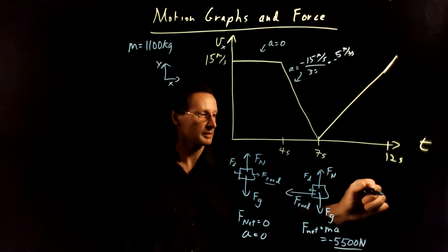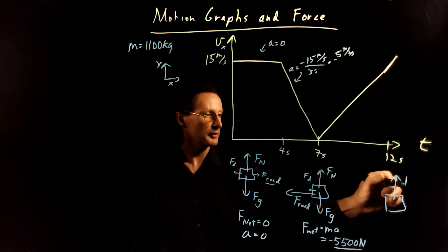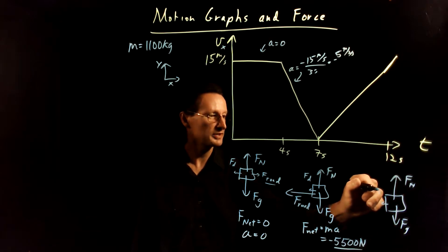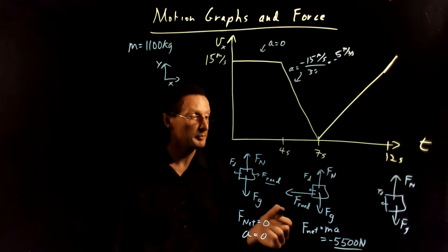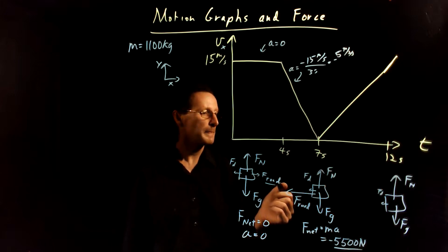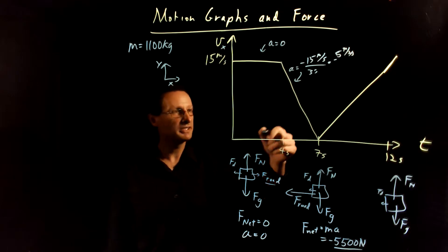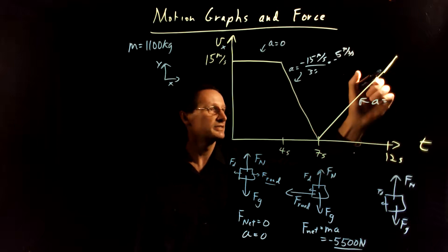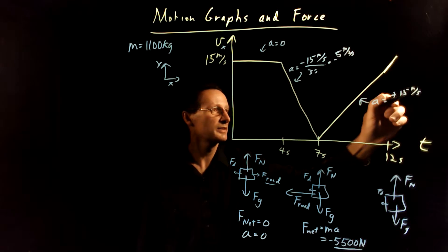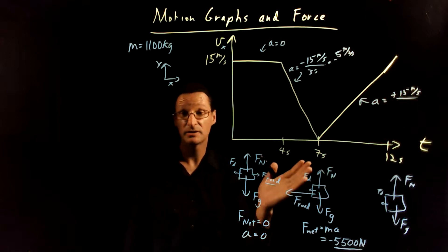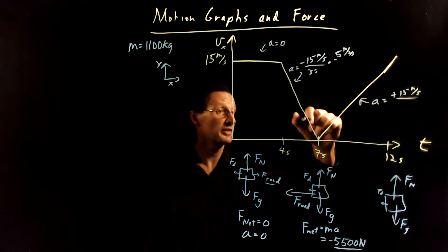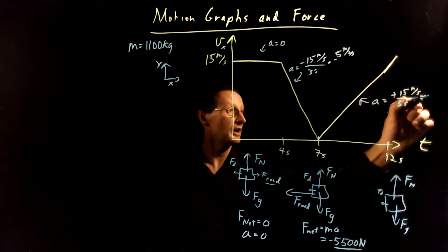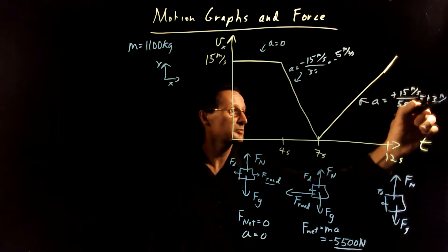Let's think about this last segment. Again, we have the normal force up and force of gravity down, and some small drag force that will vary because the speed is changing. Just like before, we need the slope of this segment. The rise is positive 15 meters per second, and that occurs over a period of 5 seconds — a more gentle slope than last time. When you compute that, you get a positive 3 meters per second per second.